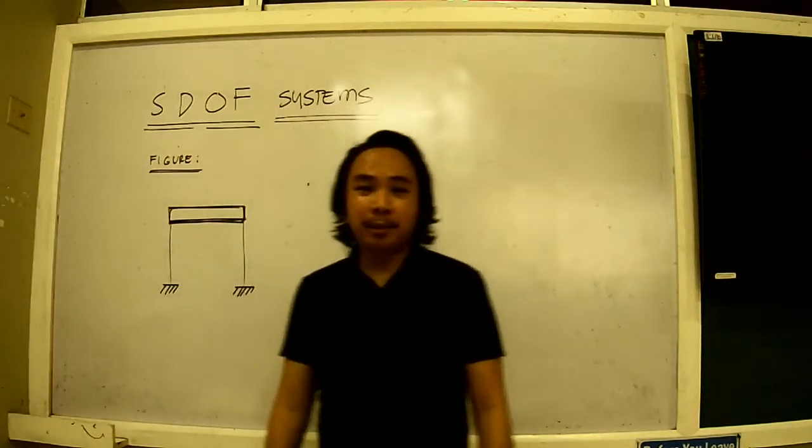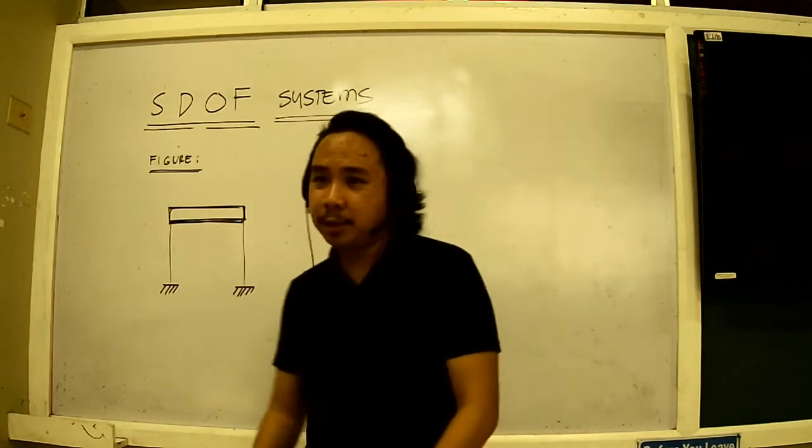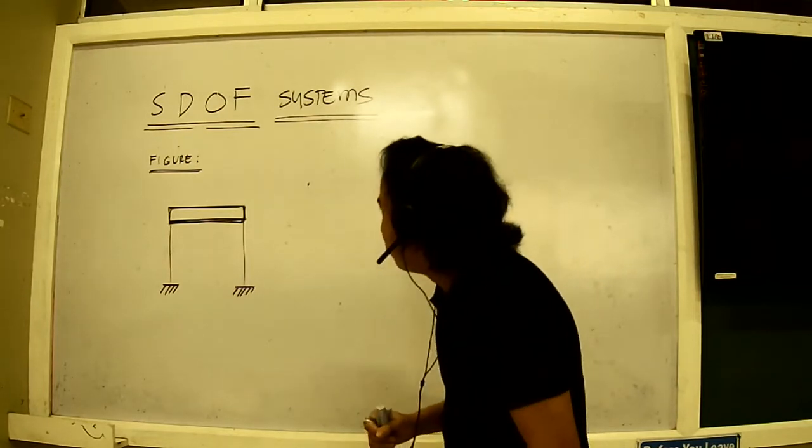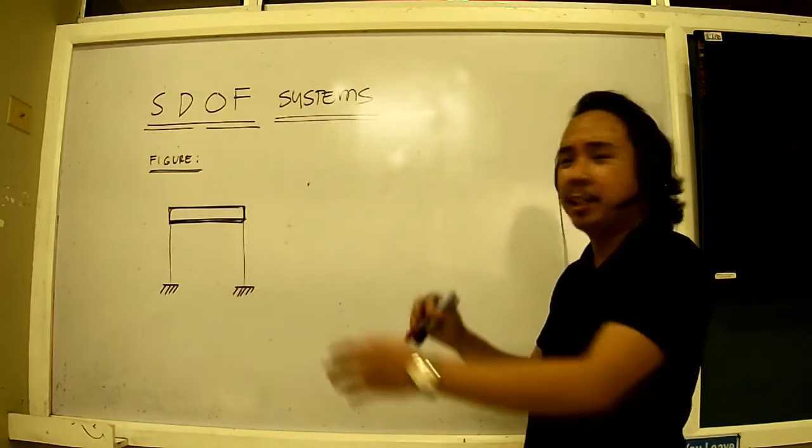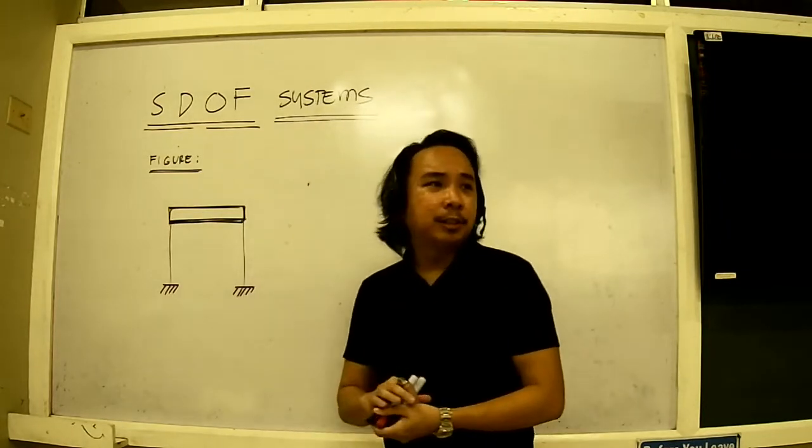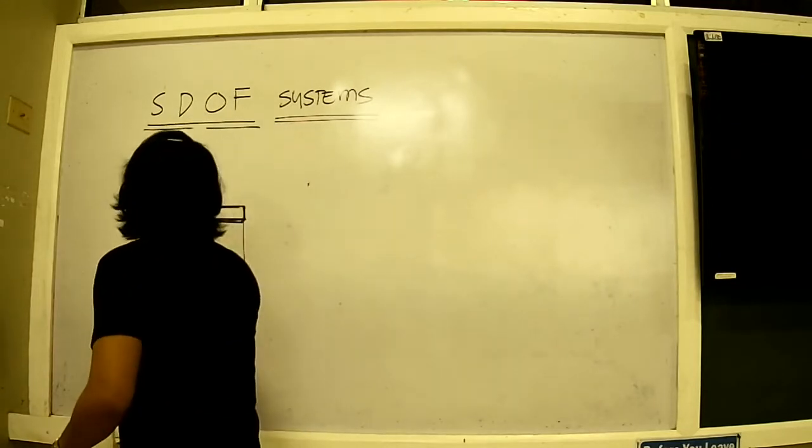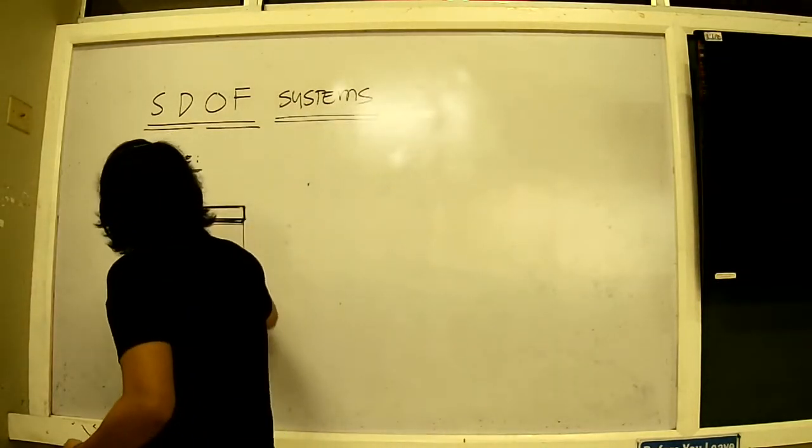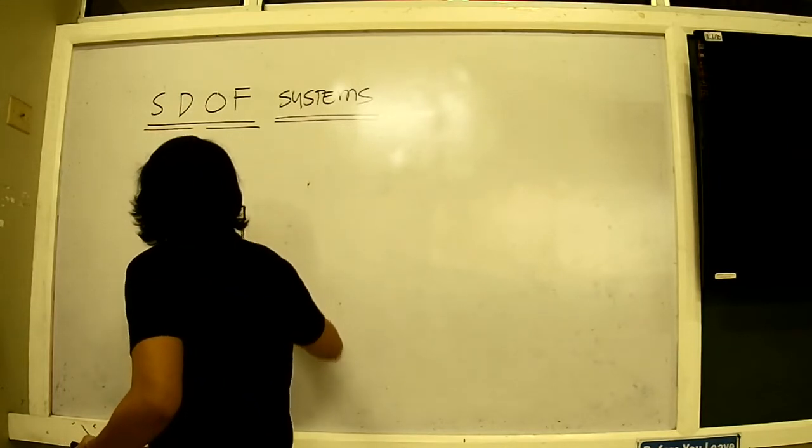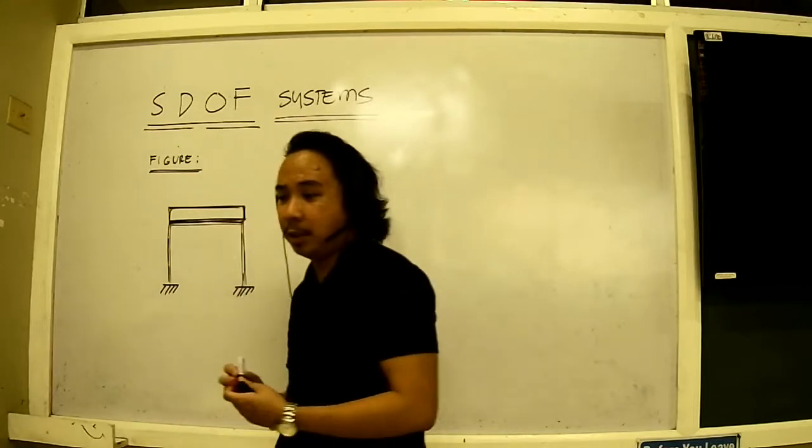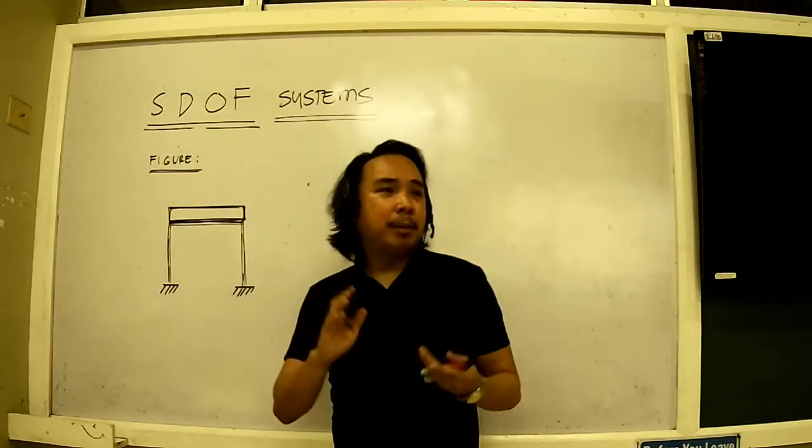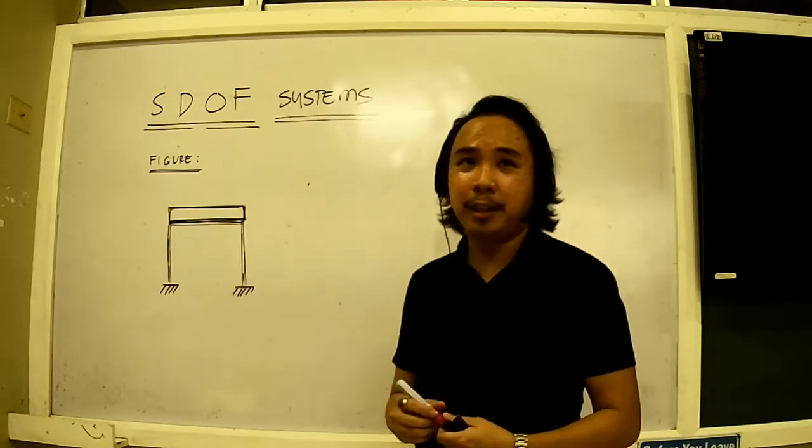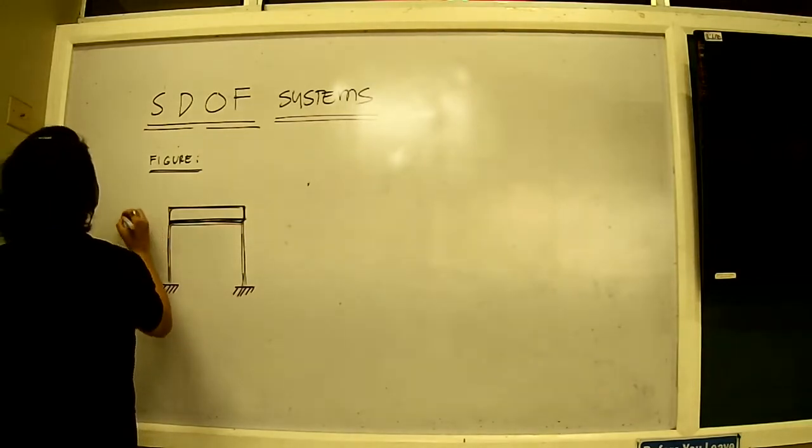Okay, so when we talk about single degree of freedom systems, I would like to set an example here with a one-story floor system that is supported by columns. Typically, this is the setup for most of our buildings here. What we will study here is how the building behaves when it is subjected to a lateral load that is generated from seismic activity.